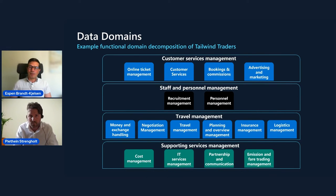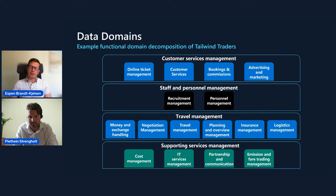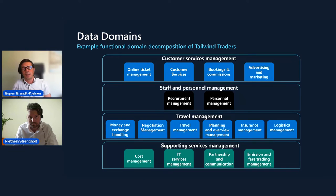Over the last couple of years, we've had multiple engagements with customers helping them to implement data mesh. I get a lot of questions, and one of the questions I probably get the most is how to separate between the different platforms. A key aspect is decentralization of the data ownership, and like Emerson just referred to, the domain orientation. Piet Heinz, how do you see this? Do you see any distribution of data between domains?